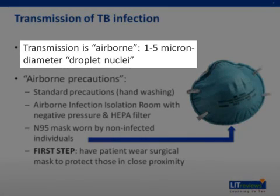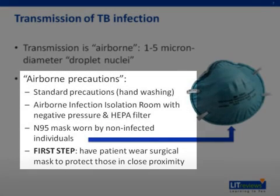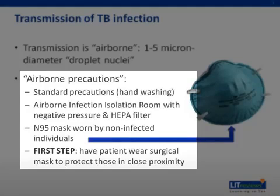Transmission of tuberculosis is airborne, which is to say the organism is transmitted in 1 to 5 micron diameter droplet nuclei. In order to stop the spread of these nuclei, airborne precautions are implemented. This includes both contact precautions, hand washing, and airborne precautions, including an airborne infection isolation room. This is a negative pressure room to keep all the molecules of air in the room, and also includes a HEPA filter. Any health care workers or family members who enter the room should wear an N95 mask to protect them from the infection.